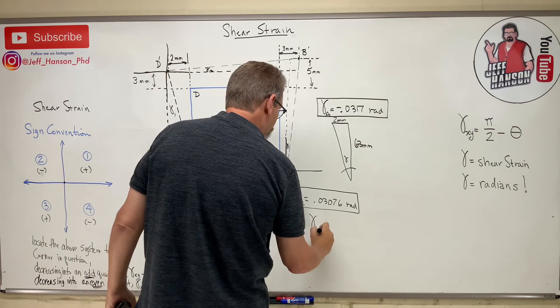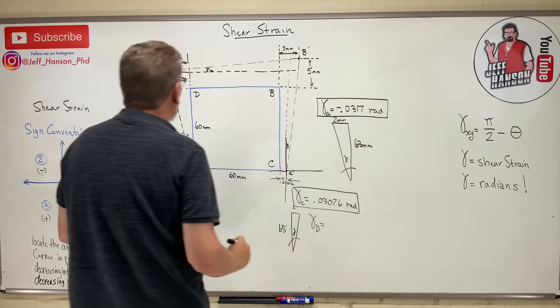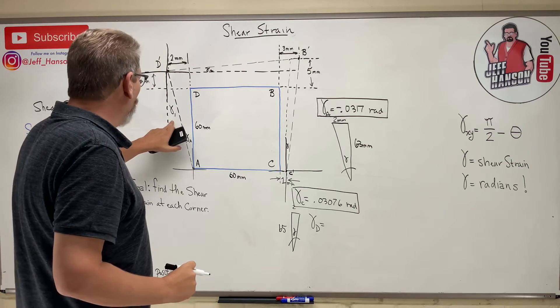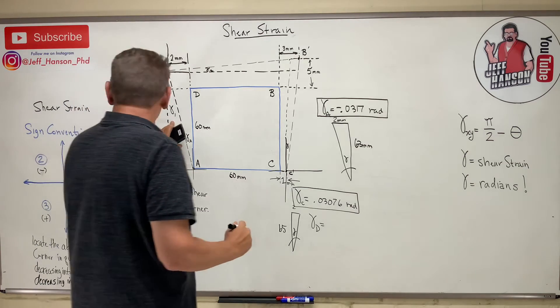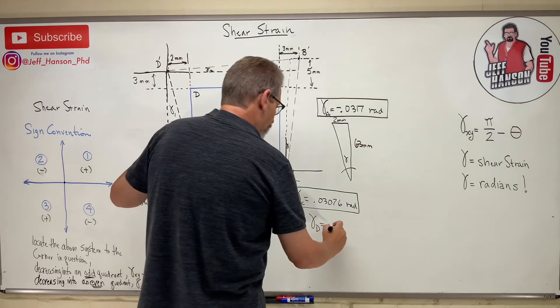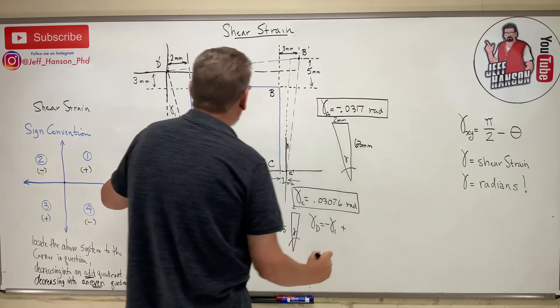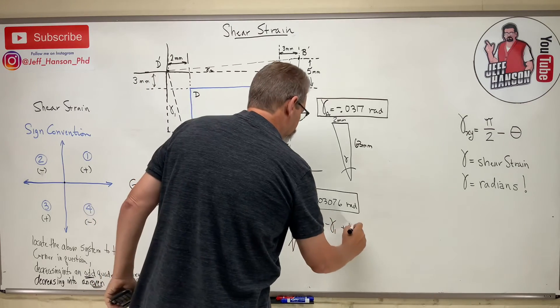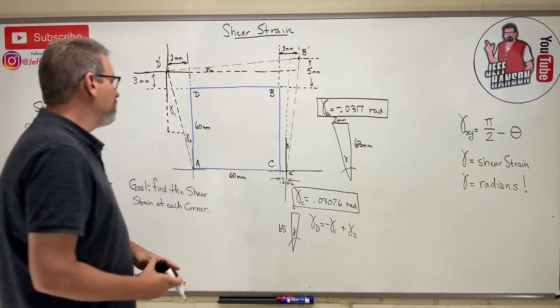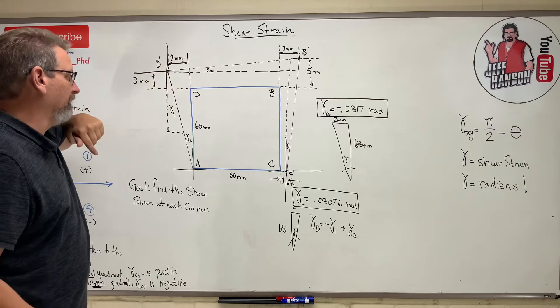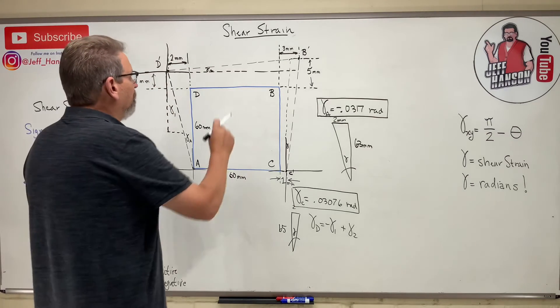So this is D, so gamma D is equal to, let's see, gamma 1, we said was going to be negative. So it's going to equal negative gamma 1 plus gamma 2. You get that? Because this one's in quadrant 4, that one's in quadrant 1.